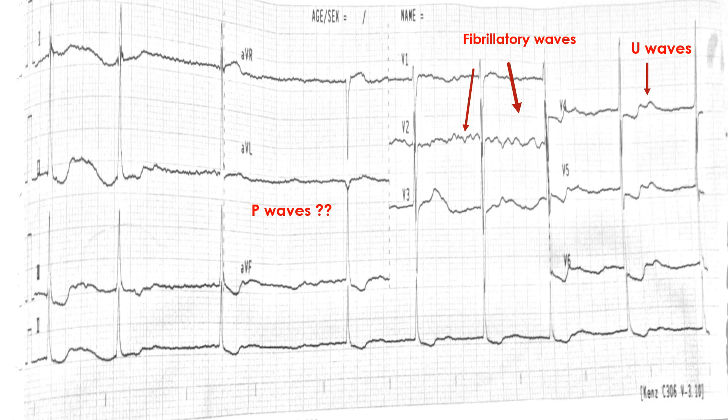One thing that is pertinent to mention is the presence of U waves, although they are pretty hard to identify. There are some reasons that can be associated with the presence of U waves, which we will discuss further. Always try to dig out all the findings available on the ECG. So far we have identified atrial fibrillation and the presence of U waves.